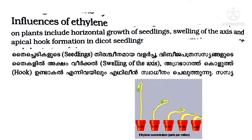Influences of ethylene on plants include horizontal growth of seedlings, swelling of the axis, and apical hook formation in dicot seedlings.